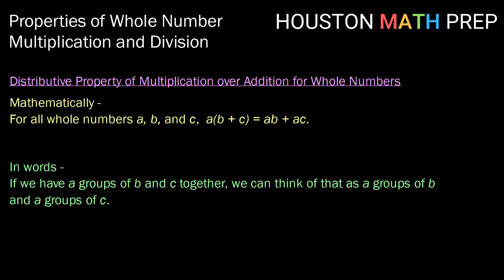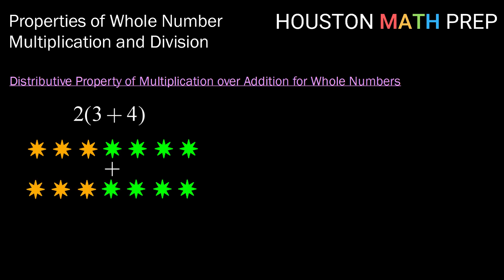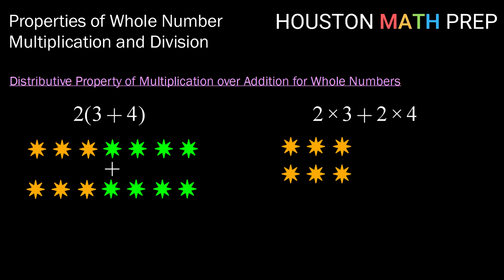In words, if we have a groups of b and c together, we can think of that as a groups of b and a groups of c. For example, if we have two times three plus four, we can think of that as two groups of three plus four — here's one group of three plus four, and if we add another of that, we have our total. Notice that is the same as two times three plus two times four. Here is our two times three, and if we add two times four, we can show that we have the same total amount — so these are the same.